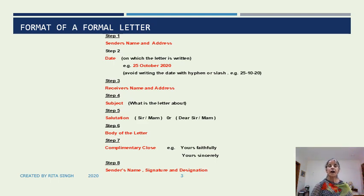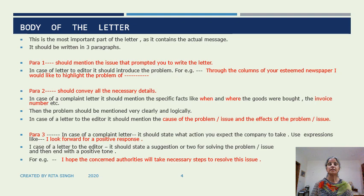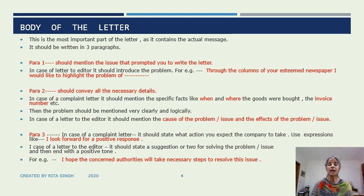Hope you have understood how to write the format of a formal letter. Now let us discuss the body of the letter in detail. This is the most important part of the letter as it contains the actual message. It should be written in three paragraphs. Paragraph 1 should mention the issue that prompted you to write the letter. In case of a letter to the editor, it should introduce the problem. For example, we should begin by writing: 'Through the columns of your esteemed newspaper, I would like to highlight the problem of...' — then mention the problem that prompted you to write the letter.